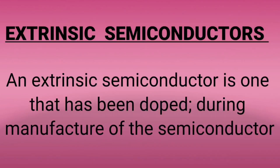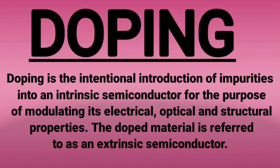An Extrinsic Semiconductor is one that has been doped during manufacture of the semiconductor. Doping is the intentional introduction of impurities into an intrinsic semiconductor for the purpose of modulating its electrical, optical, and structural properties. The doped material is referred to as an Extrinsic Semiconductor.